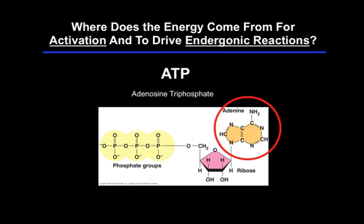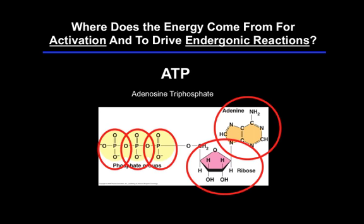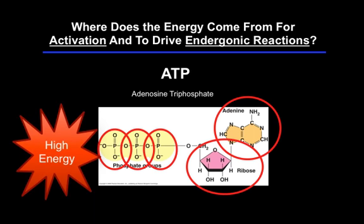Part of the ATP molecule, from which it gets its name, is an adenine molecule, otherwise known as a nitrogenous base. Connected to that is a five-carbon sugar called ribose, and then bonded to that are three phosphates. ATP is a high-energy molecule that energizes other molecules in a reaction and can provide the energy needed for activation or to drive an endergonic reaction.